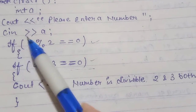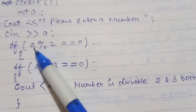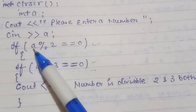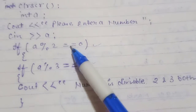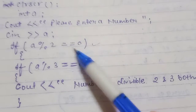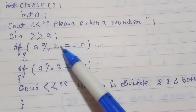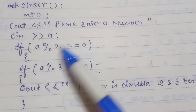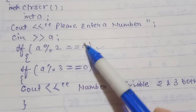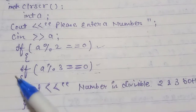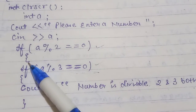The first if condition checks whether the number entered by the user is divisible by 2 — that is, if a % 2 == 0. If the number is divisible by 2, the remainder will be 0, and then the opening brace starts for the nested condition.